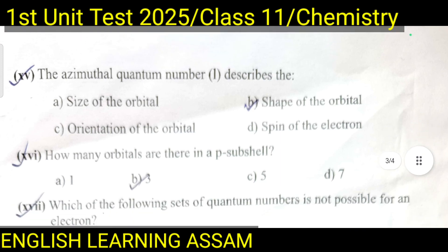Question number fifteen: The azimuthal quantum number l describes the — A. size of the orbital, B. shape of the orbital, C. orientation of the orbital, D. spin of the electron. The correct option is B — shape of the orbital.